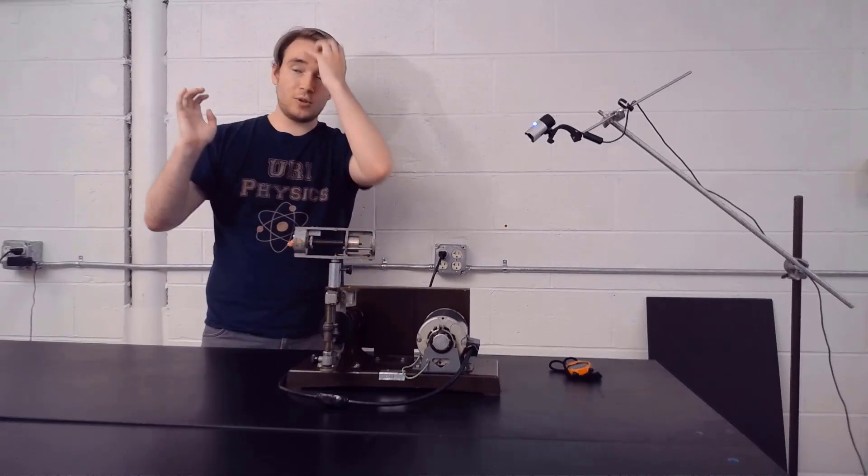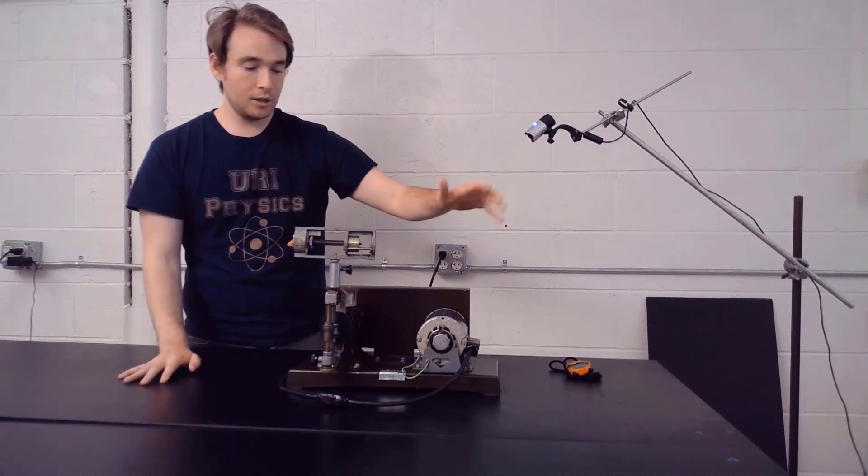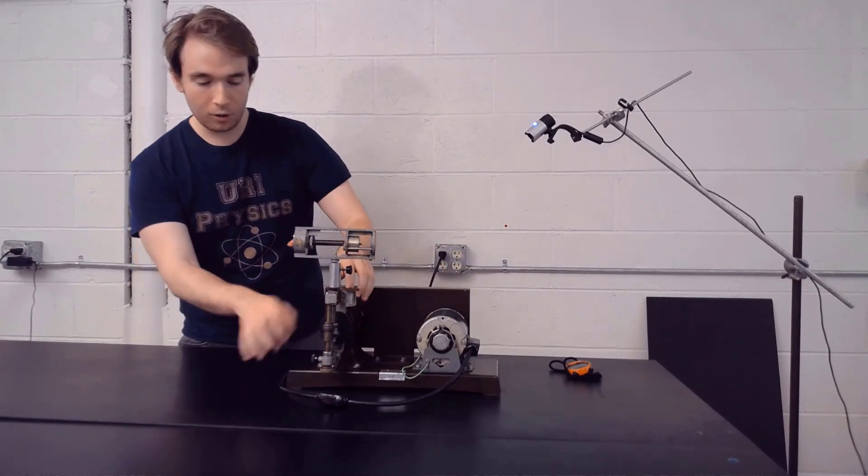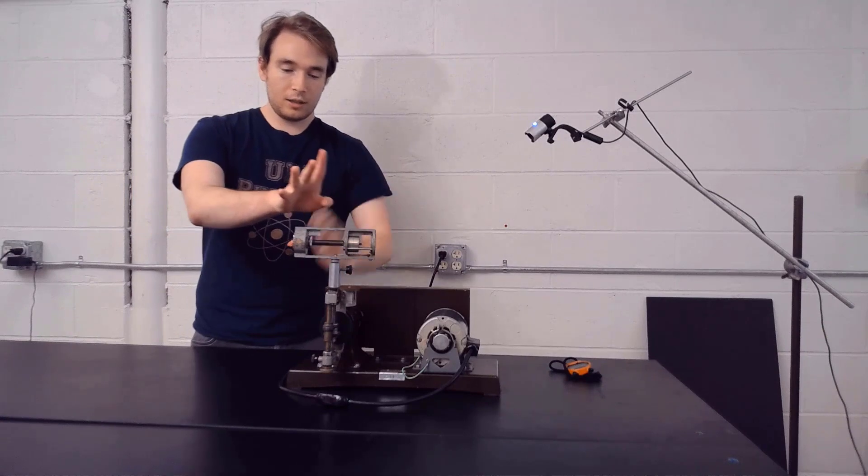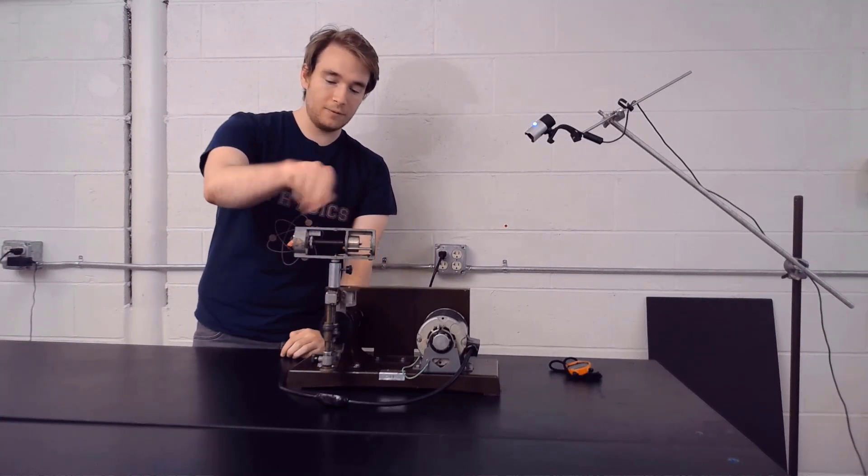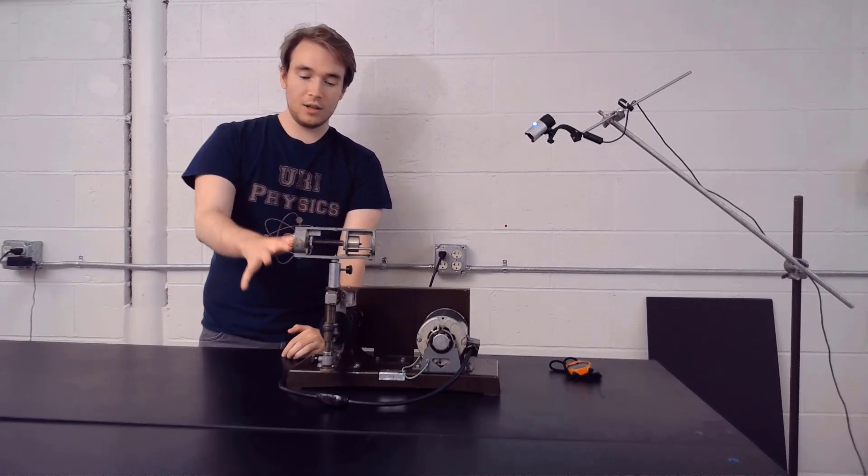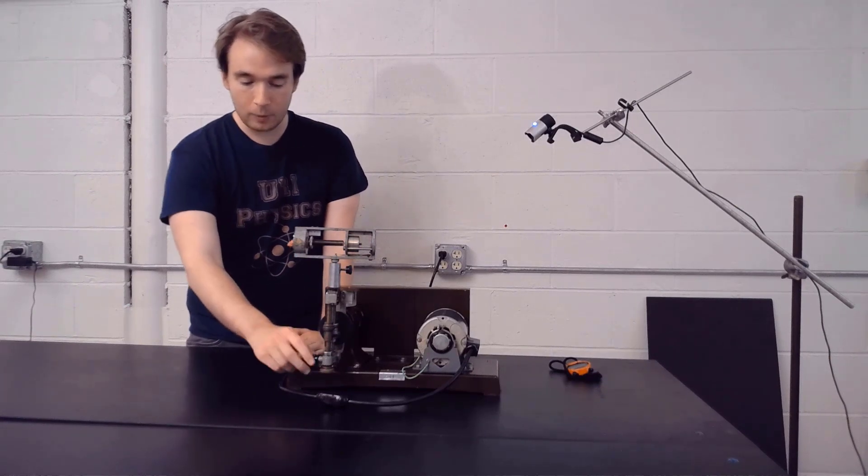We're going to demonstrate circular motion using this setup right here. We have a motorized setup with all these gears which are going to move this top part at varying speeds. It's going to turn this gear at a set rate but we can adjust it.